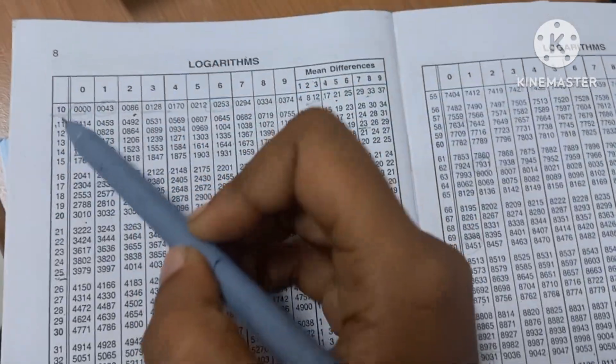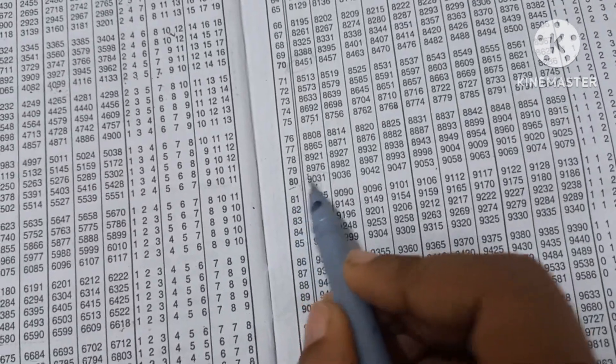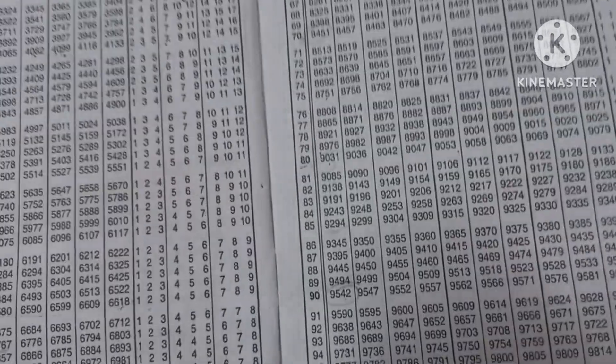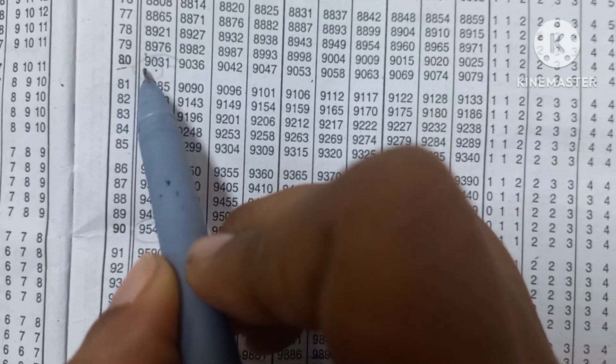Logarithms basically begin with 10. So we will go with the term not 8, but 80. So 80, 0. Since the next value is not given, the value is 9031.